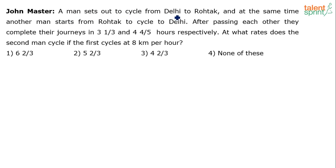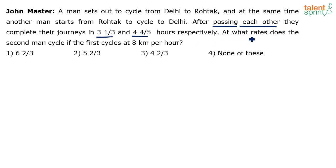A man sets out to cycle from Delhi to Rotak, and at the same time another man starts from Rotak to Delhi. After passing each other, they complete their journeys in 3⅓ and 4⅘ hours respectively. Remember, after crossing each other, they take 3⅓ hours and 4⅘ hours respectively.